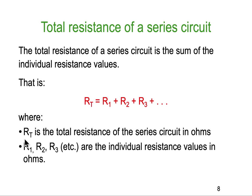So, simply, RT is the total amount of resistance in the circuit in ohms, and R1, 2, 3, 4, 5, 6, 7, etc. are the individual resistance values.